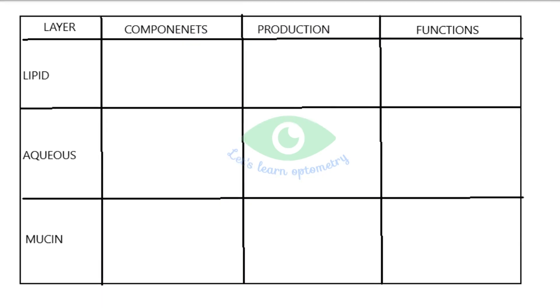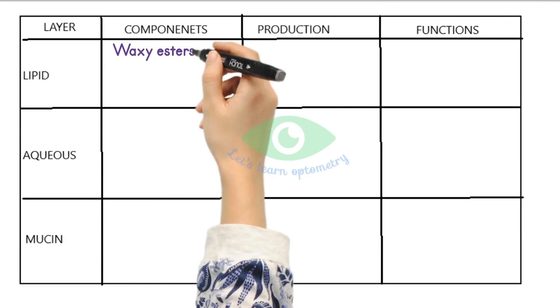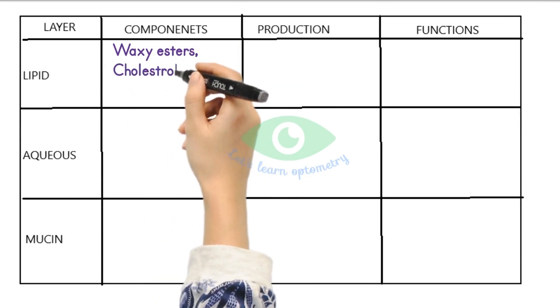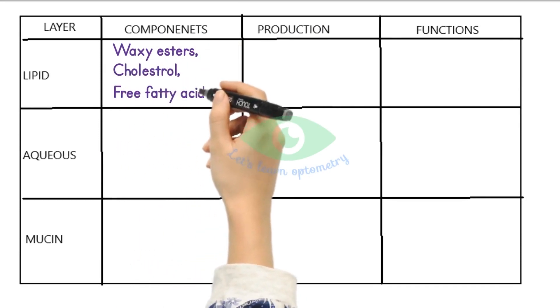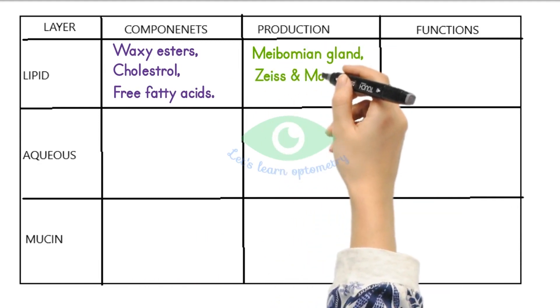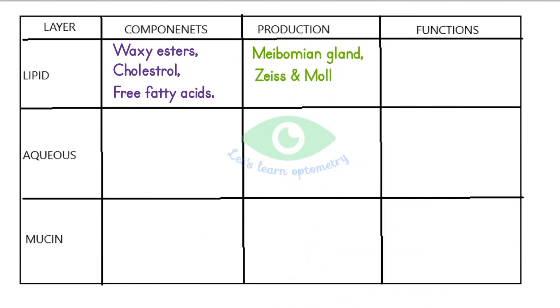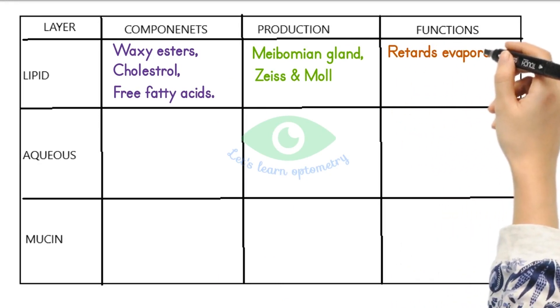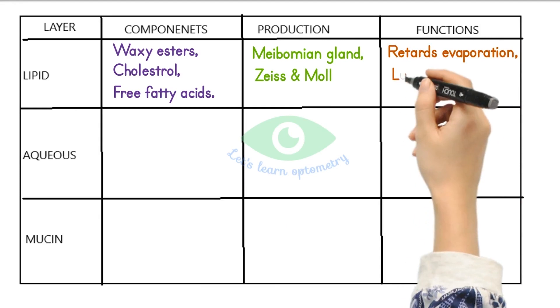The outermost is a lipid layer containing waxy esters, cholesterol, and free fatty acids. It is primarily produced by the Meibomian glands and a small amount by the glands of Zeiss and Moll. We will see about these glands in a separate video. The lipid layer prevents evaporation and provides lubrication for smooth eyelid movement.